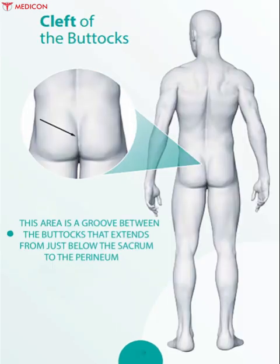Cleft of the buttock has several names such as natal cleft, gluteal crease, and gluteal crevasse. This area is a groove — a long narrow cut or depression — between the buttocks that extends from just below the sacrum to the perineum and above the anus, and is formed by the borders of the buttock muscles called gluteus maximus.